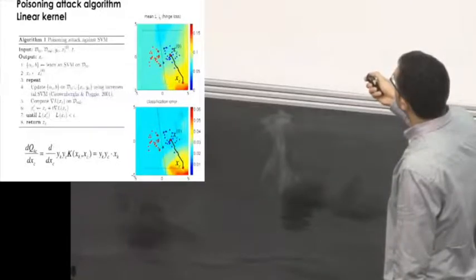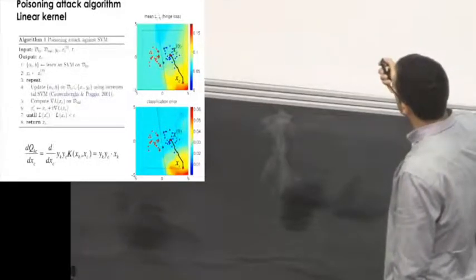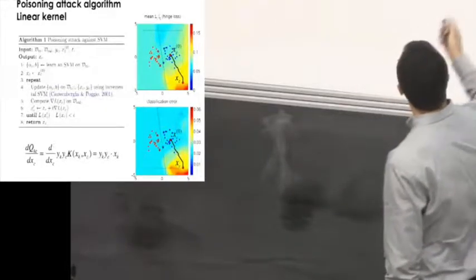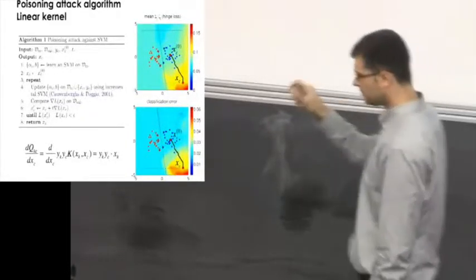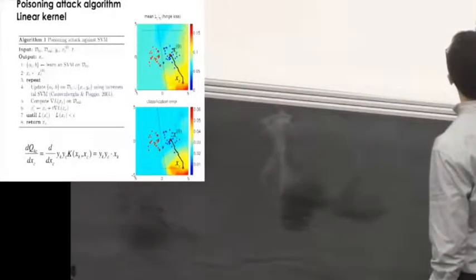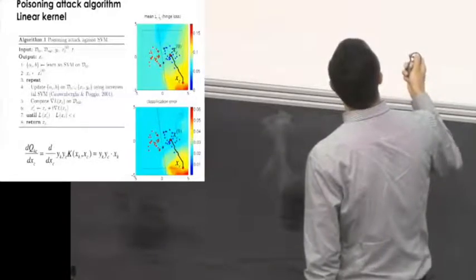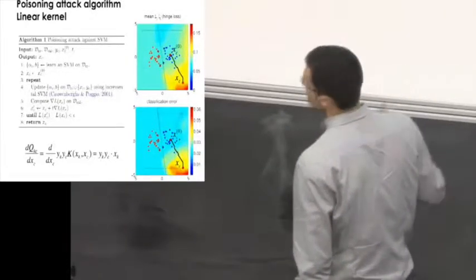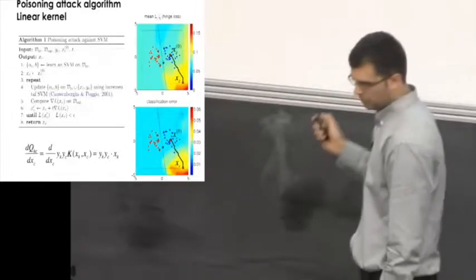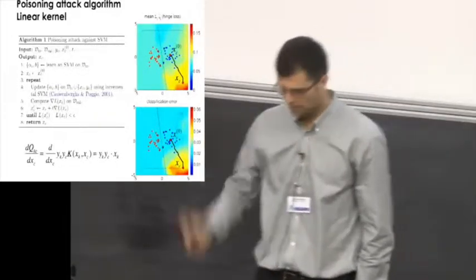In the case of a linear kernel, this is how the derivative of the kernel looks like. We just can plug this derivative into the gradient equation that we've seen before to compute it. This is basically an exemplary run of the algorithm, where we initialize the attack point somewhere in the blue class. You can appreciate how the gradient ascent works and climbs the error function here. This is the hinge loss depicted in color. Basically, this is the same plot using the classification error, and this shows that the approximation is quite reasonable in this case. Another thing that we did here is to use this box constraint to enforce the point to stay in some region around the training data and not to go far away.